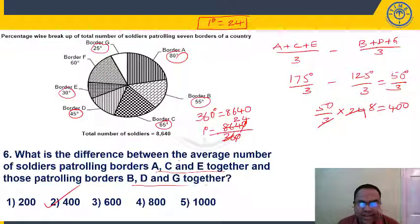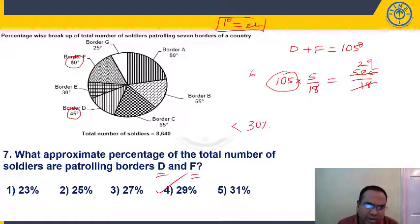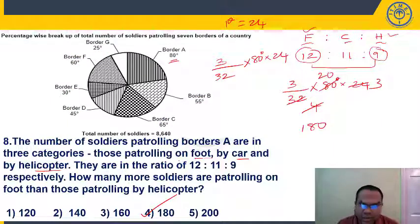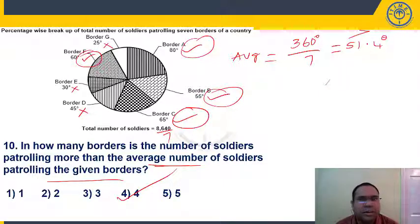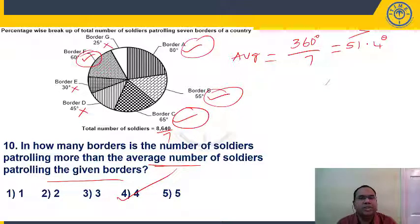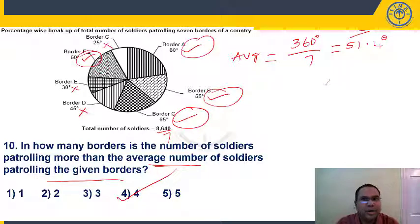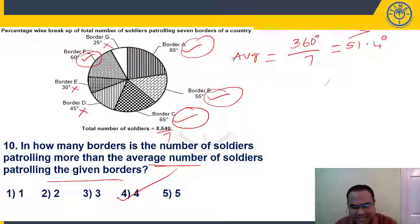Observing questions 6 to 10: Q6 required the 1-degree value of 24; Q7 was a percentage question so no actual value needed; Q8 required the final actual value; Q9 was a ratio question so no actual value needed; Q10 also needed no actual value. The key takeaway is don't waste time finding actual values unnecessarily. Hope you understood the basic concepts — this will help you solve pie chart questions for prelim or assistant level exams. Thank you students, stay home, stay safe, prepare with PAN classes.